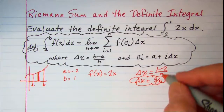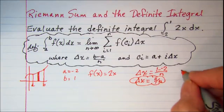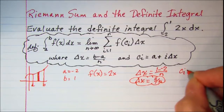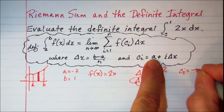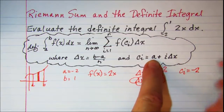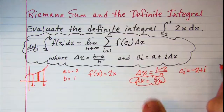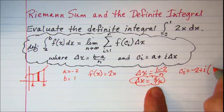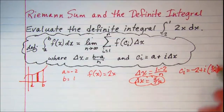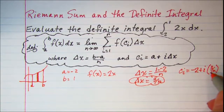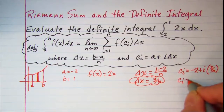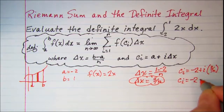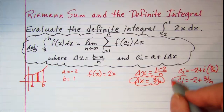We also need to find c sub i. c sub i is a, our lower limit of integration, which is negative 2, plus i times delta x, which we said was 3 over n. Multiplying i times 3 over n gives us c sub i equal to negative 2 plus 3i over n. We will need to use this as well.